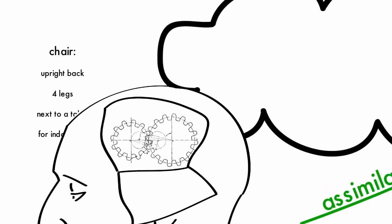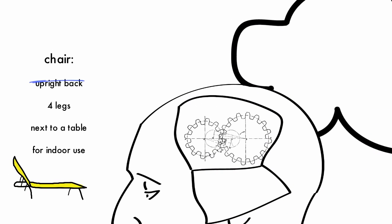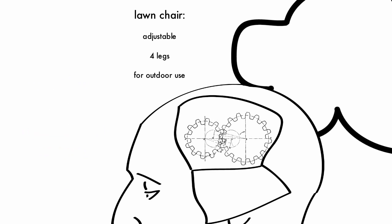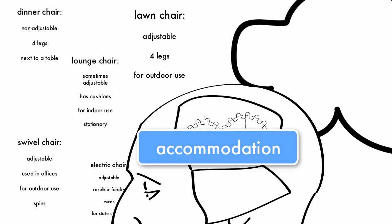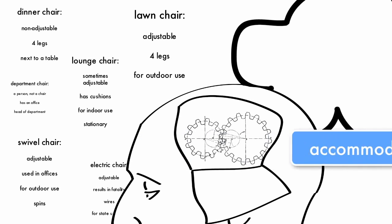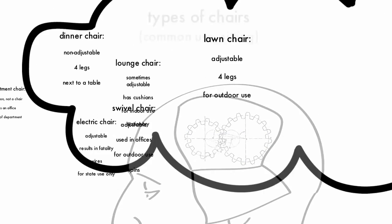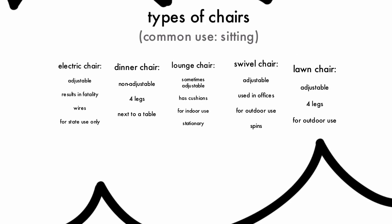When you need to store new information that conflicts with the schema you already have in place, a schema overhaul is in order. The process of accommodation involves the altering of schemas as a result of new information or new experiences, and new schemas may be developed during this process.